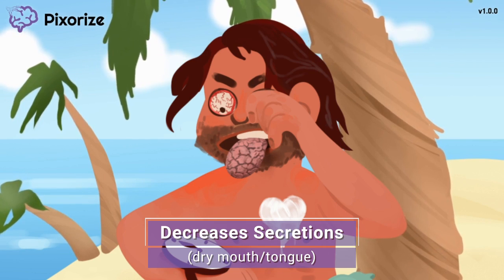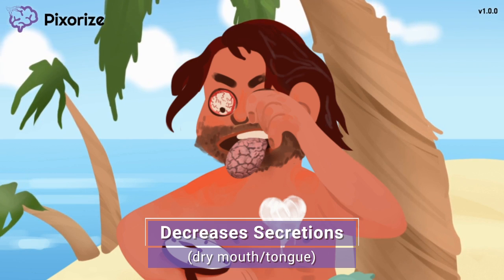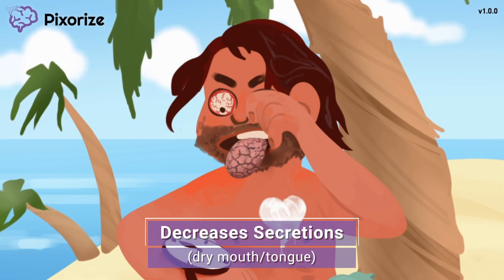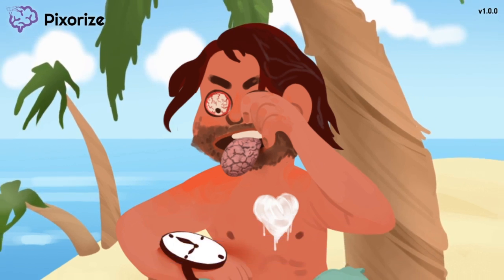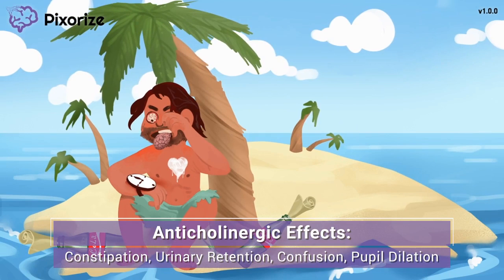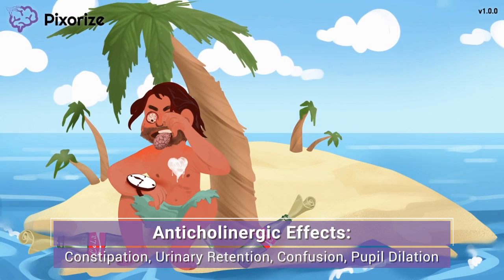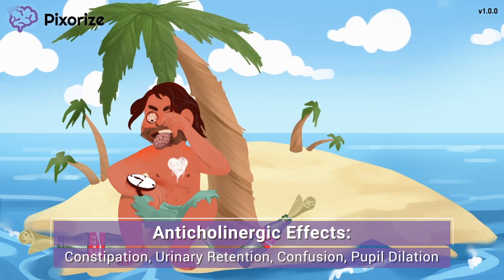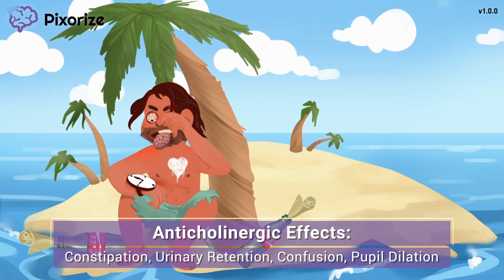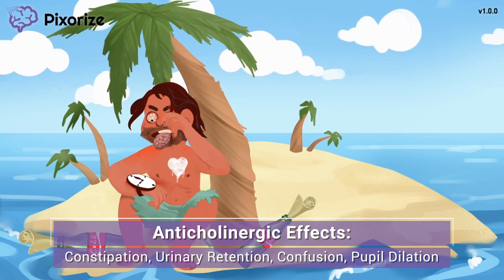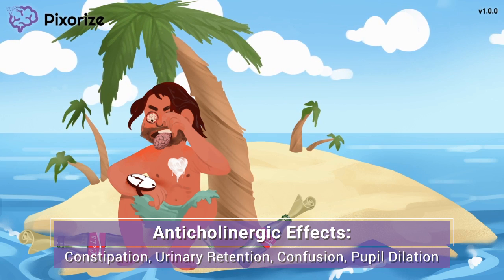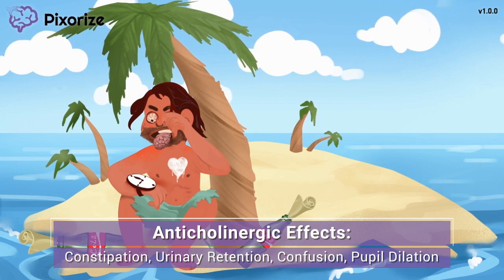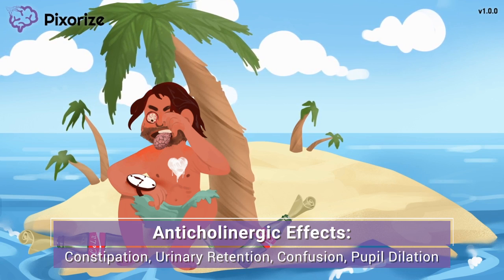However, decreasing bodily secretions can also lead to some undesirable side effects, like dry mouth, decreased sweating, and dry, itchy eyes. We should also mention a slew of other effects that result from blocking cholinergic signaling. Your rest and digest response stimulates a lot of bodily functions, including bowel movements, urination, brain function, and pupil constriction. Blocking all of these effects can lead to constipation, urinary retention, confusion, and pupil dilation.